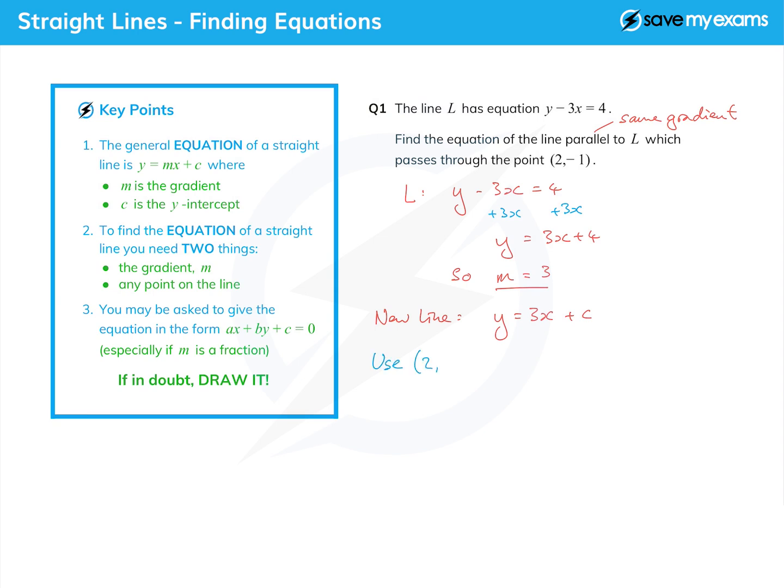So minus 1 equals 3 times 2 plus c. 3 times 2 is 6. I want the c on its own, so I'm going to subtract 6 from both sides.